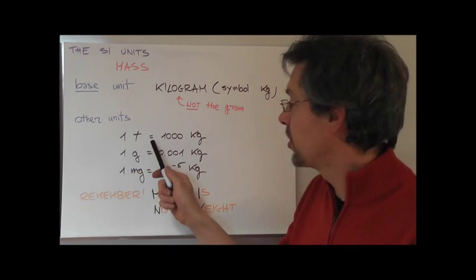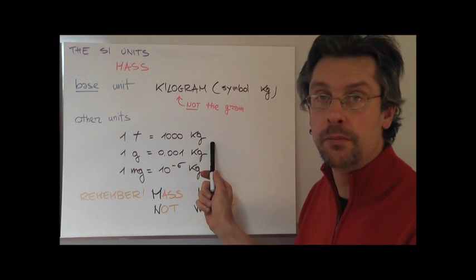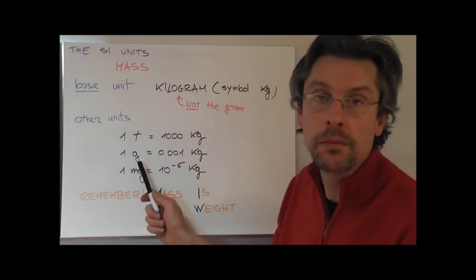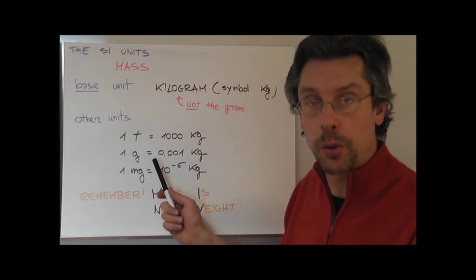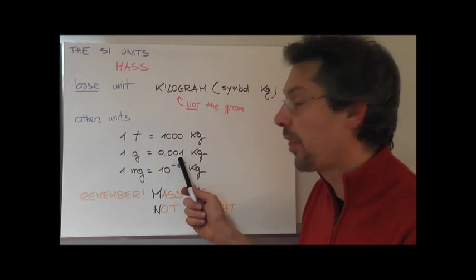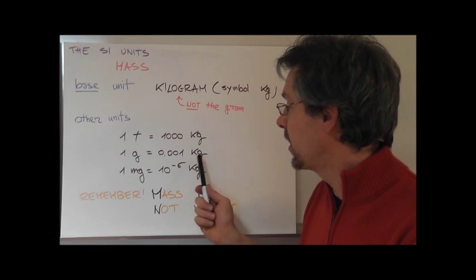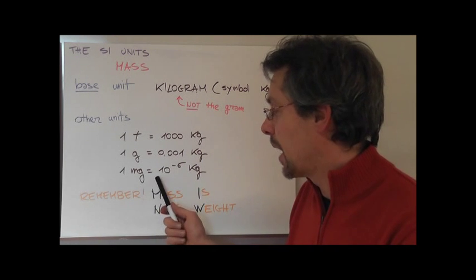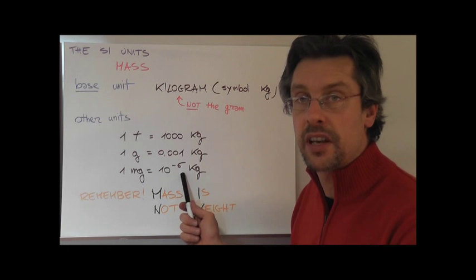What are the other units for the mass? The ton, which is a thousand kilograms. The gram, which at this point we have to view as a subunit of a kilogram, so it's a thousandth, or 0.001 kilograms. Or milligram, 10 to the minus six kilograms.